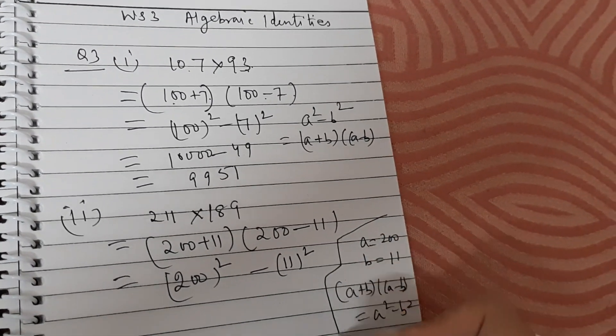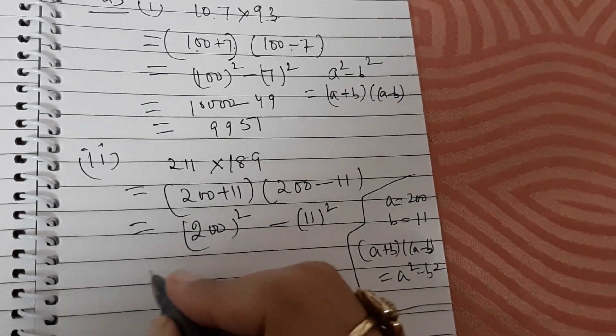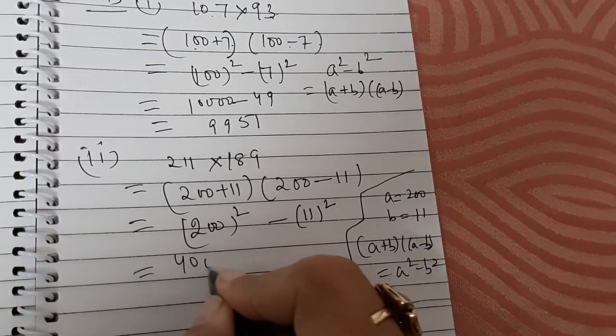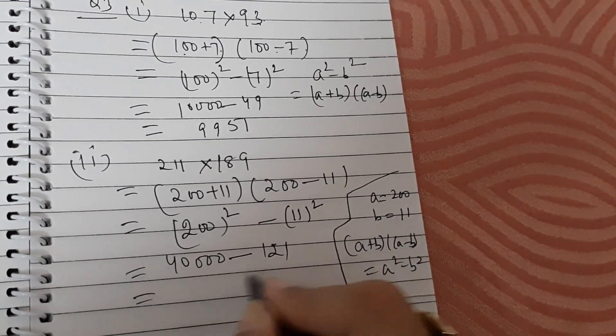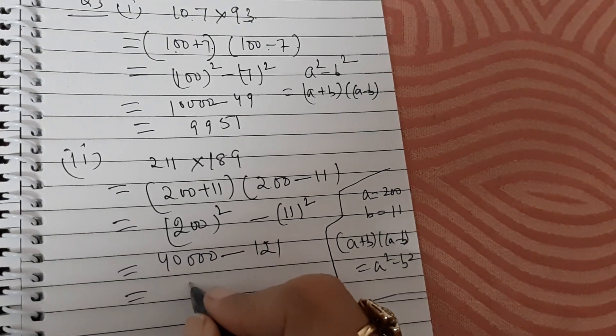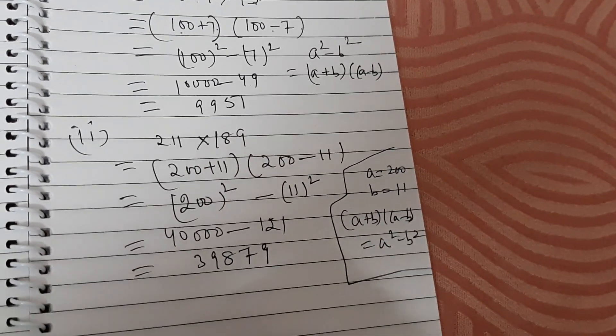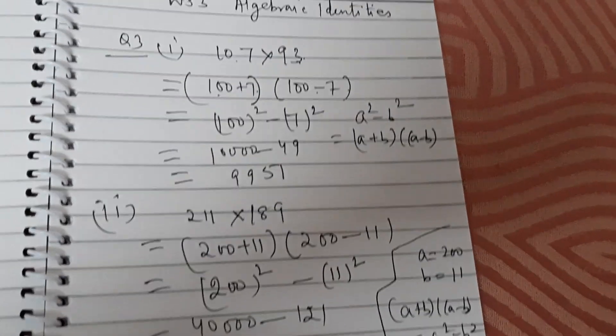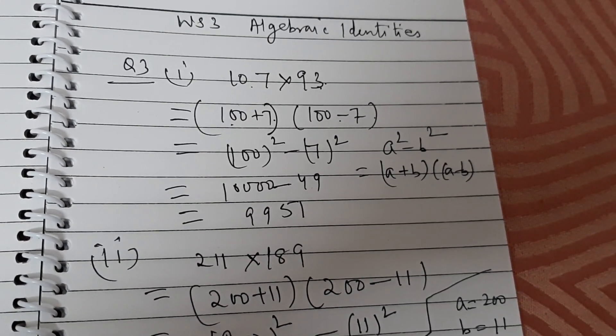This is equal to 40,000 minus 121, which equals 39,879. I hope it is clear to you. Solve more questions given in the exercise. All the best.